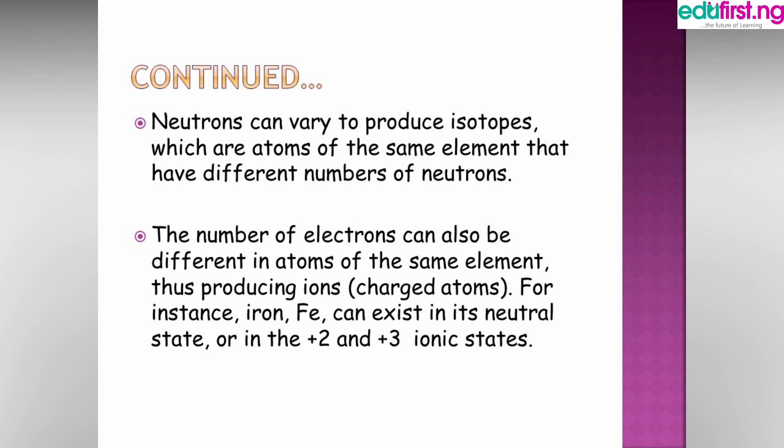To be continued: neutrons can vary to produce isotopes, which are atoms of the same element that have different numbers of neutrons. The number of electrons can also be different in atoms of the same element, thus producing ions - charged atoms. For instance, an ion can exist in its neutral state or in its +2 or +3 ionic states.